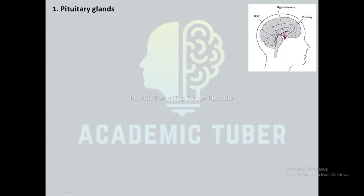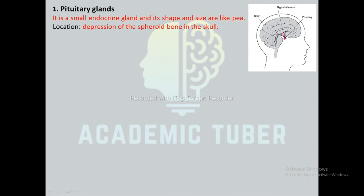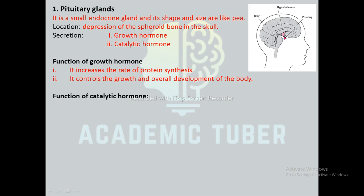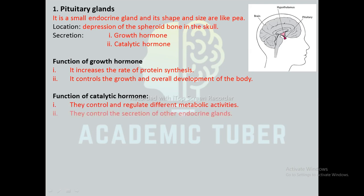Pituitary gland: it is a small endocrine gland shaped and sized like a pea, as seen in the diagram. It is located in the depression of the sphenoid bone in the skull. It secretes growth hormone and catalytic hormone. Growth hormone increases the rate of protein synthesis and controls the overall growth and development of the body. Catalytic hormones control and regulate different metabolic activities and also control the secretion of other endocrine glands.